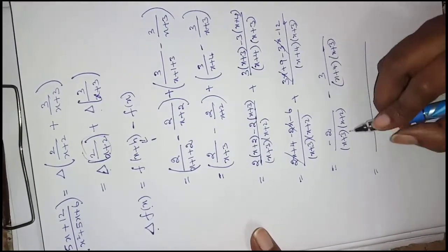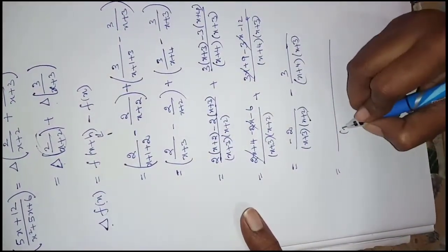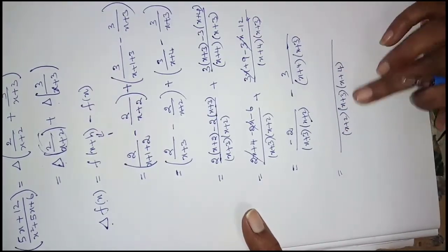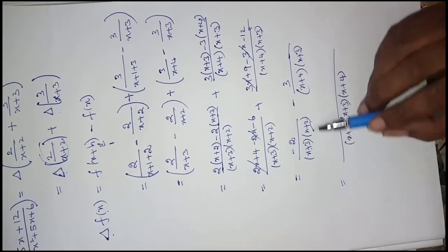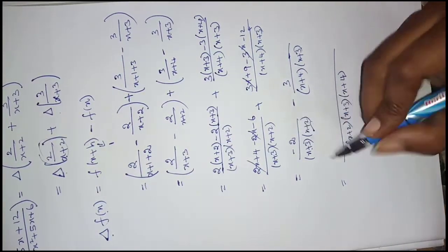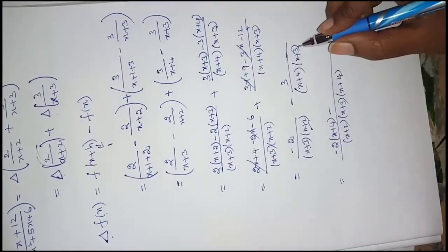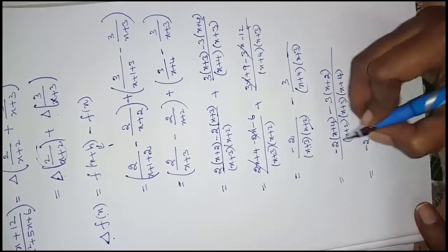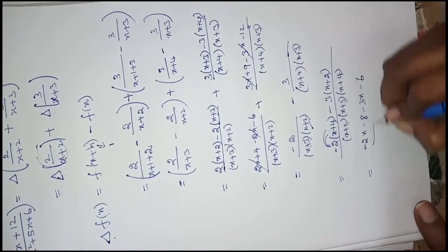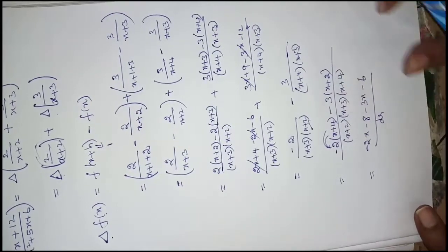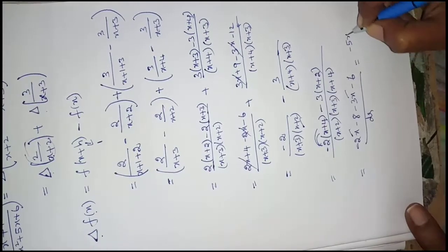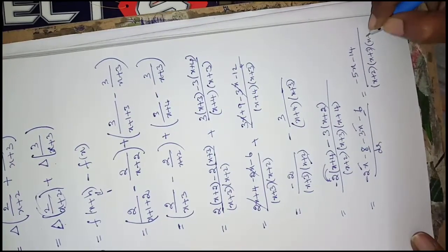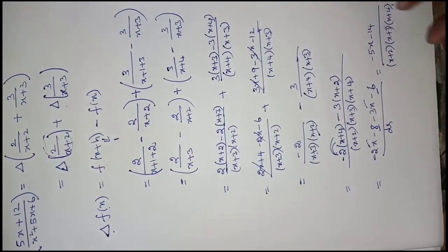Taking the overall LCM as (x+2)(x+3)(x+4), and doing cross multiplication: 2(x+4) minus 2(x+4) for the first part, giving numerator terms. Expanding: minus 2x minus 8, then minus 3x minus 6, combined gives minus 5x minus 14. So the final answer is (minus 5x minus 14) divided by (x+2)(x+3)(x+4). Thank you.